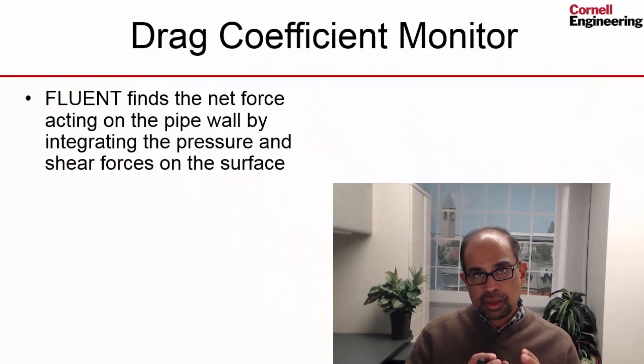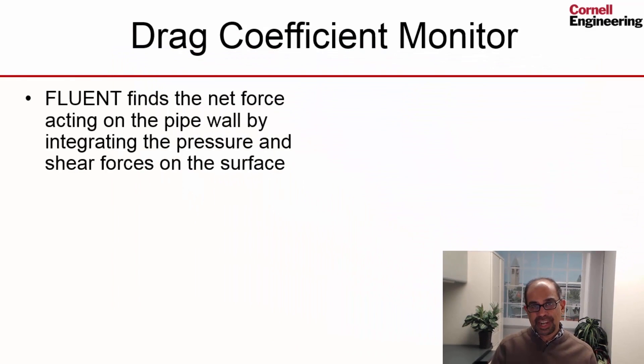Let's see how Fluent calculates a drag coefficient. The solver will find the net force acting on the pipe wall by integrating the pressure and the shear forces on the surface.